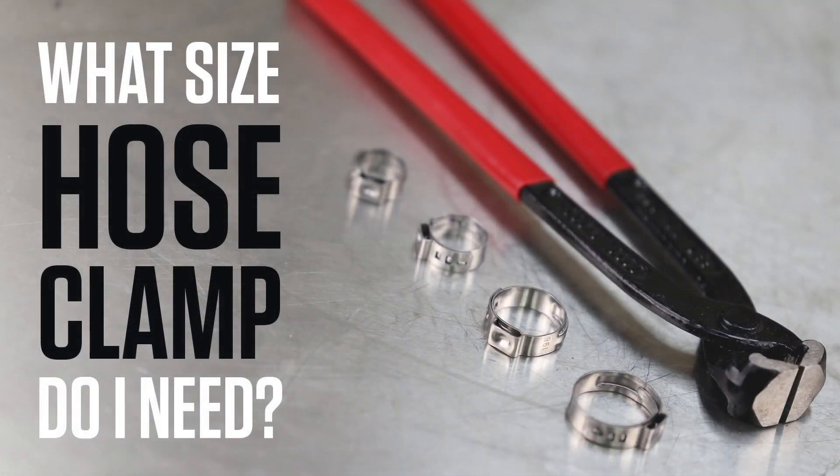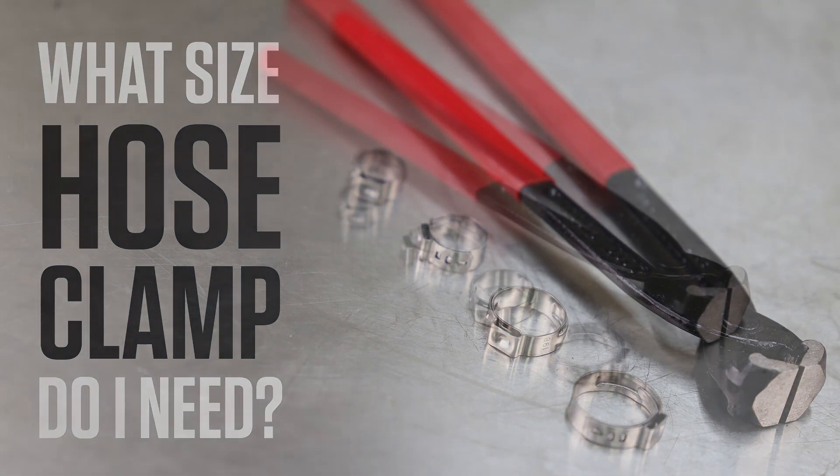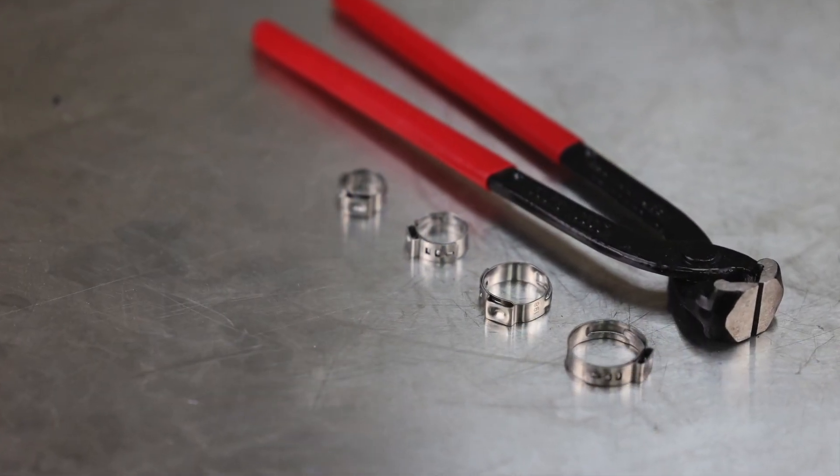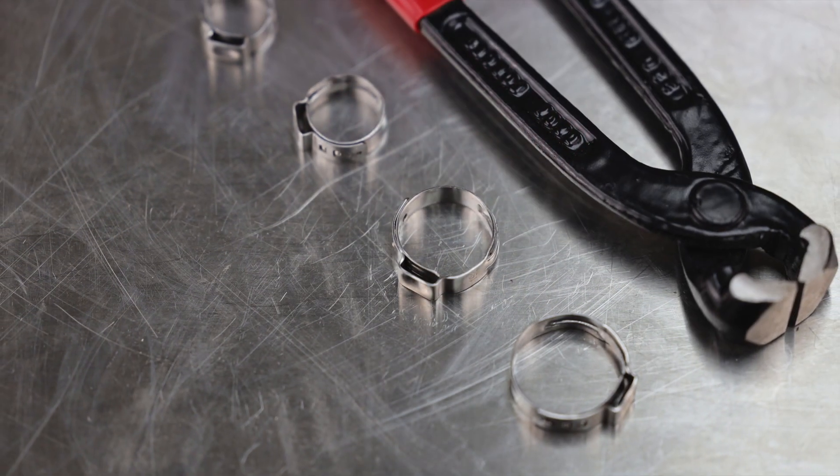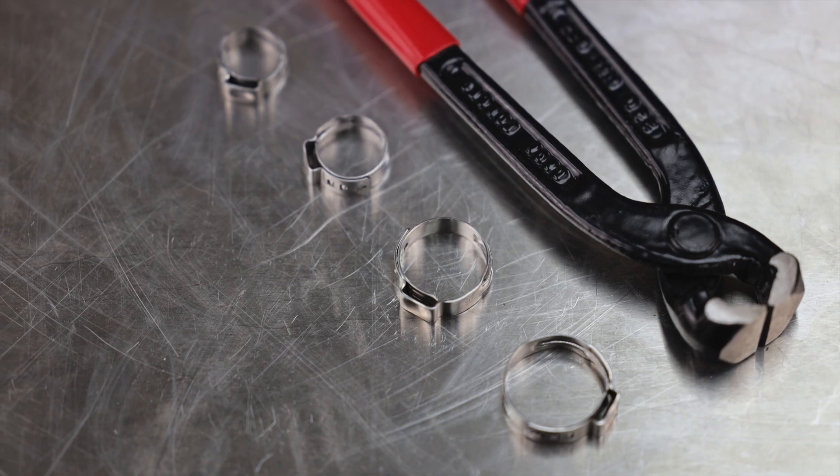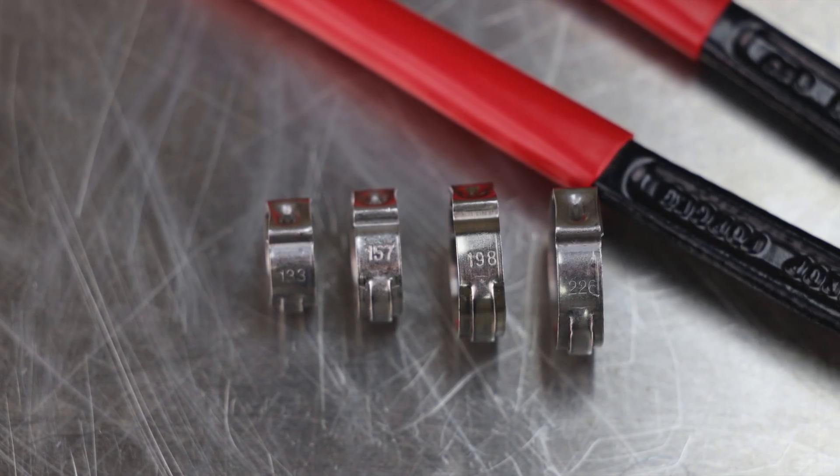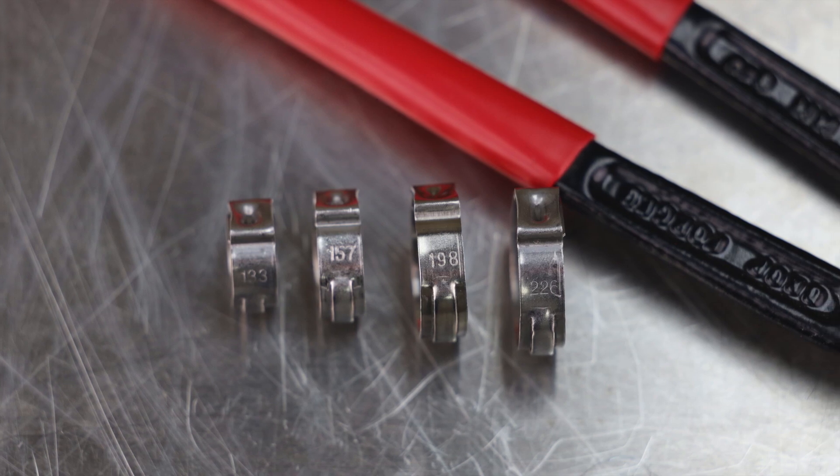Stepless ear clamps, also referred to as Oetiker clamps, come in a variety of sizes. These sizes are indicated by a number printed on the side of the clamp. The number indicates the inner diameter of the clamp measured in millimeters.